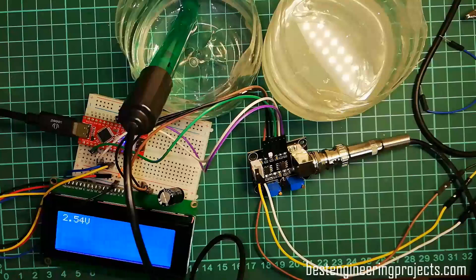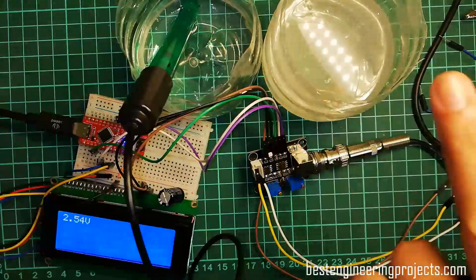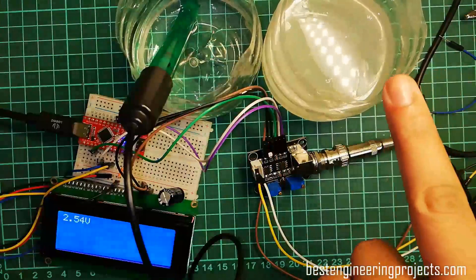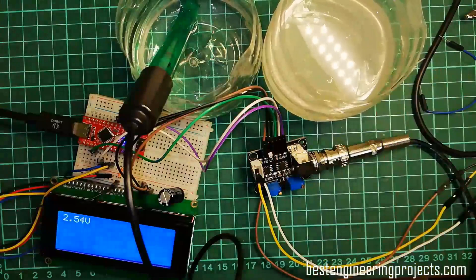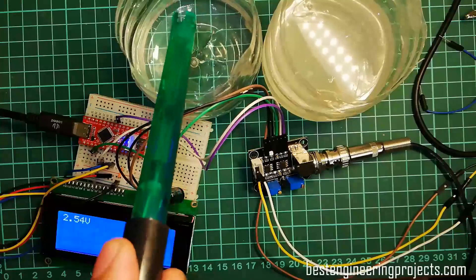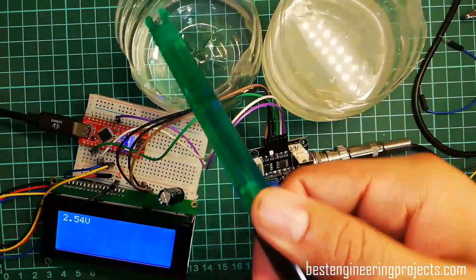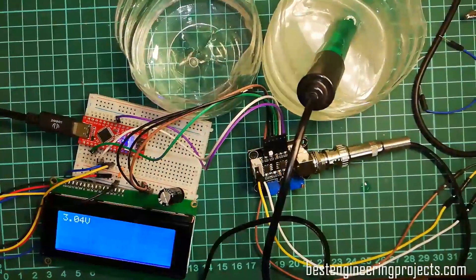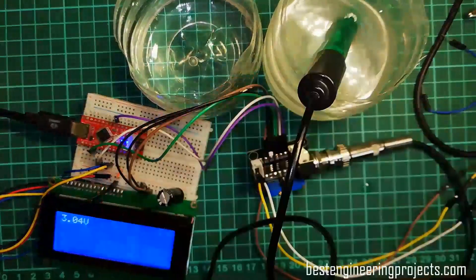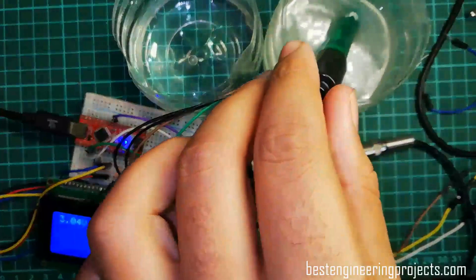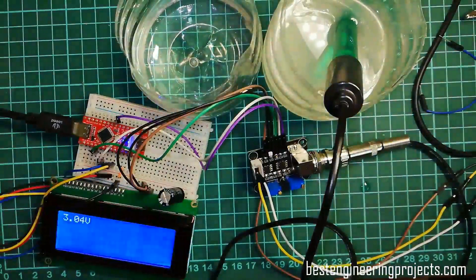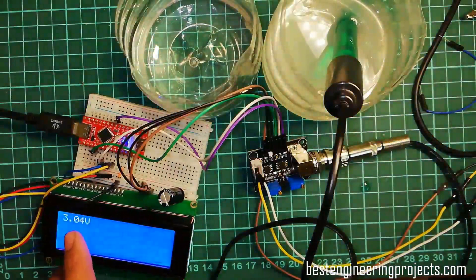Similarly, the next step is to immerse this electrode into the 4.01 buffer solution of Borax. For that, we have to wash this electrode with pure water. Again, I immerse this electrode into pH 4.01, that is solution of Borax, and note the voltage reading. That is 3.04 volts.